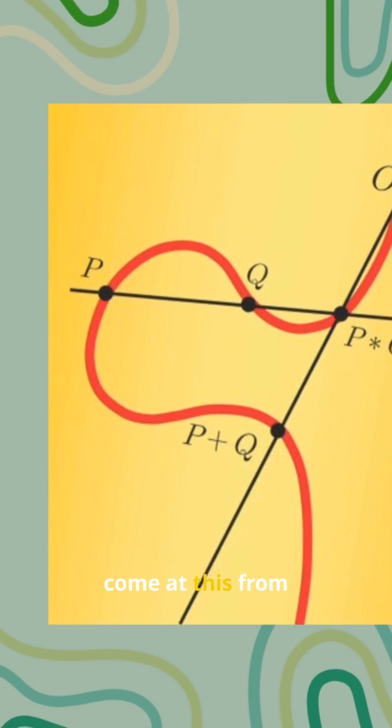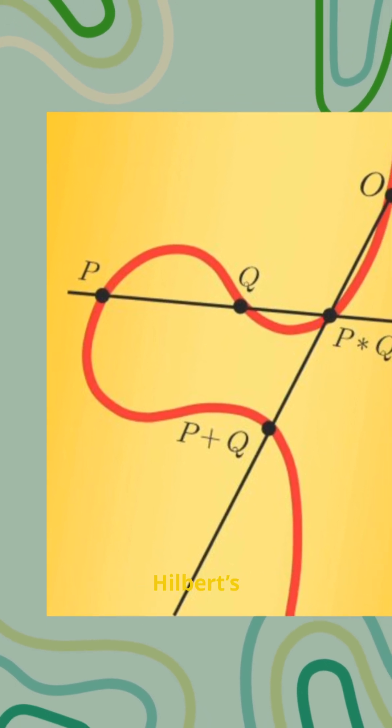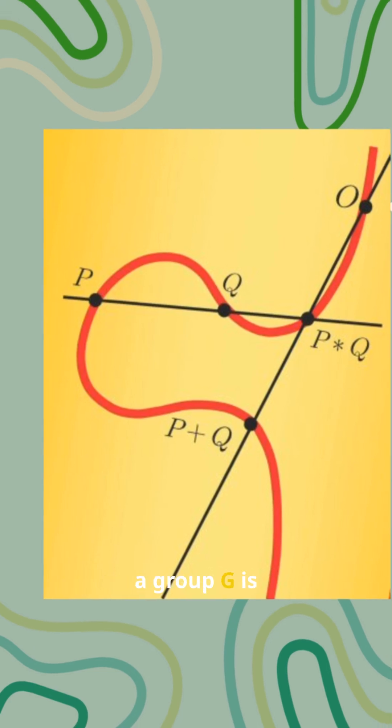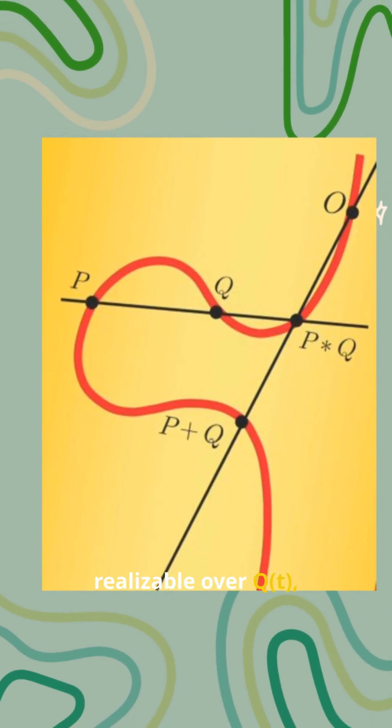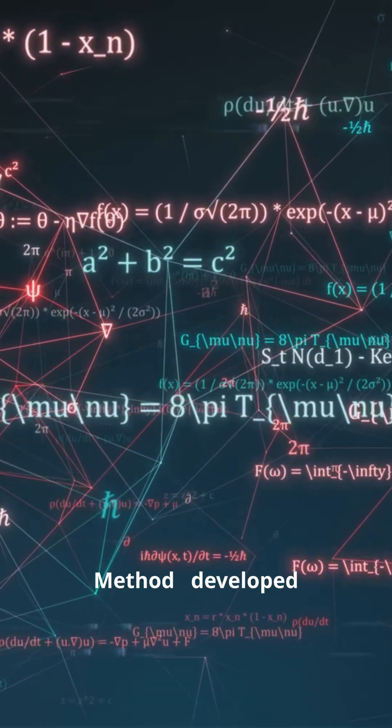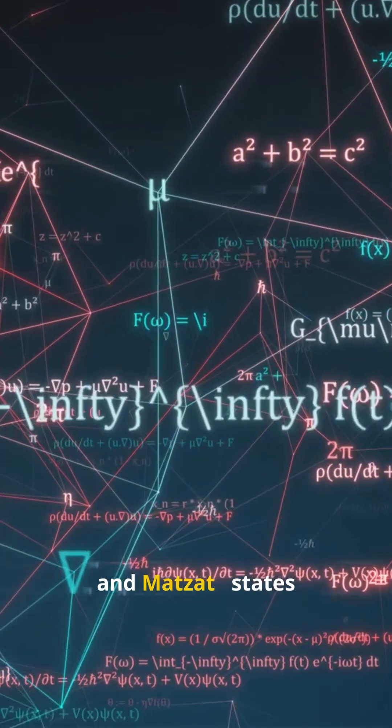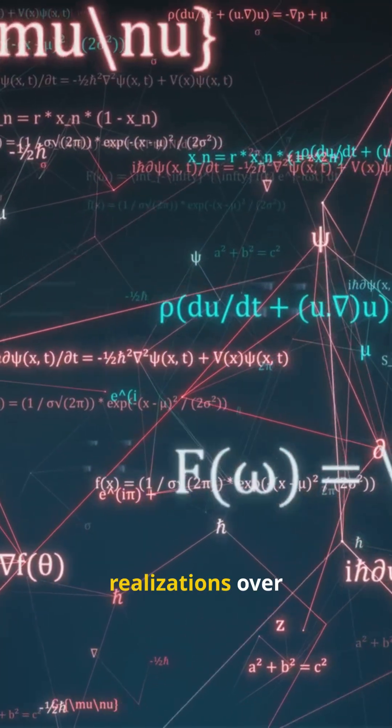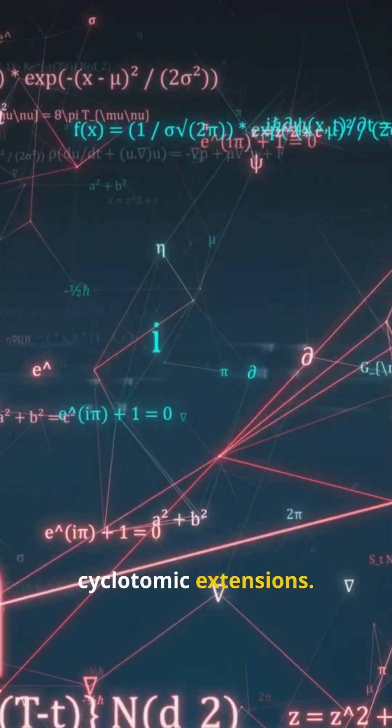Mathematicians have come at this from all angles. Hilbert's irreducibility, roughly stated: If a group G is realizable over Q(T), you can often specialize to get it over Q. The rigidity method, developed by Belyi, Thompson and Matzat, states: rigid tuples in C can force realizations over cyclotomic extensions.